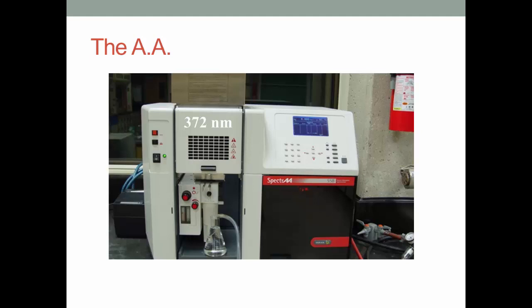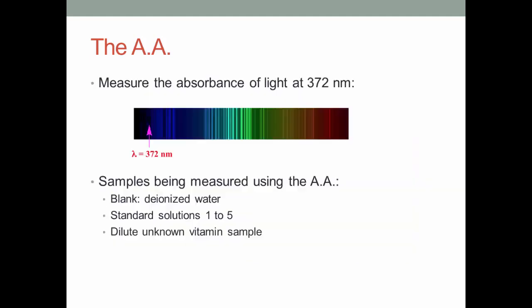Now we will be using the AA spectrometer, which is the machine you see here. The AA will measure the absorbance of light at 372 nm. The samples being measured will be a blank containing deionized water, the 5 standard solutions, and the diluted unknown vitamin solution.